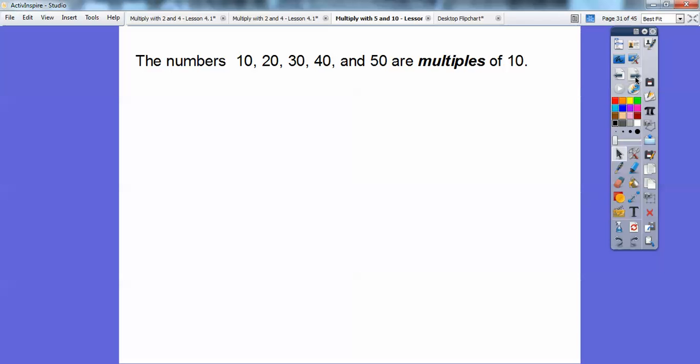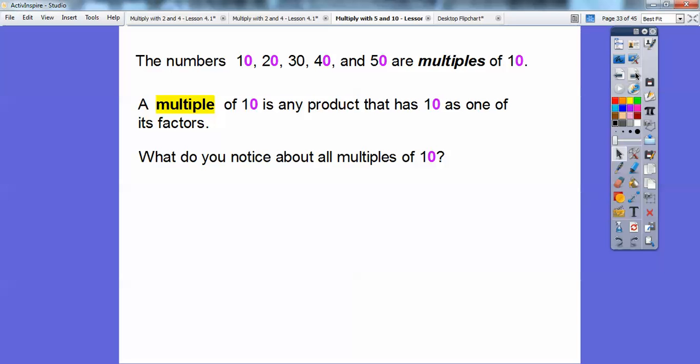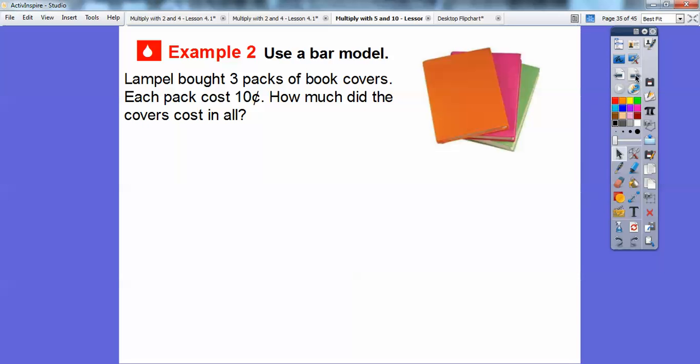The numbers ten, twenty, thirty, forty, and fifty are all multiples of ten. A multiple of ten is any product that has ten as one of these factors. Here's ten times one, this is ten times two, ten times three, ten times four, ten times five. These are all multiples of ten. What do you notice about all the multiples of ten? I kind of gave you a hint on this slide right here. I highlighted them in purple. See how all the multiples of ten end in zero? If a number ends in zero, it is also a multiple of ten. All multiples of ten end in a zero right there. That's a pretty good little trick right there.